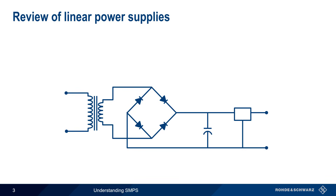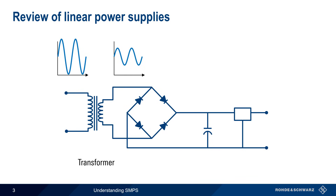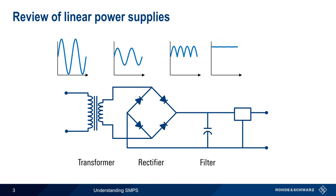Let's start with a review of the stages in a linear power supply. AC mains voltage is first stepped down to lower voltage AC using a transformer. This lower voltage AC is then rectified to produce a pulsating, positive voltage. A capacitor-based filter then smooths out this pulsating voltage to produce a mostly flat DC output voltage.